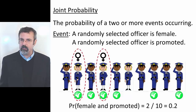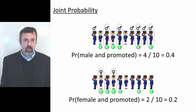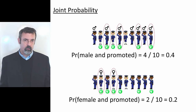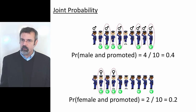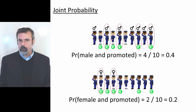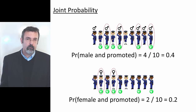So the probability of being female and promoted is 2 out of 10, or 20%. Notice the difference in these two joint probabilities. The probability of randomly selecting an officer who is both male and promoted is 40%, but the probability of randomly selecting an officer who is female and promoted is only 20%. We might conclude from this that there is some gender discrimination, because males are being promoted at twice the rate of females. But notice something: a joint probability does not tell us the likelihood of females being promoted.